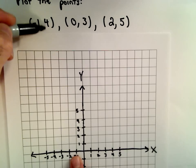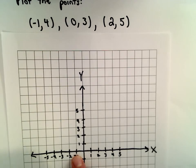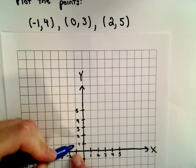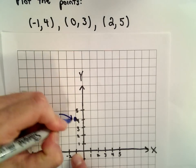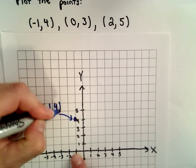Then the second coordinate tells us how far we go up or down. If it's positive, we move up; if it's negative, we move down. Since it's positive, I'm going to go up four units: 1, 2, 3, 4. That corresponds to the point (-1, 4).